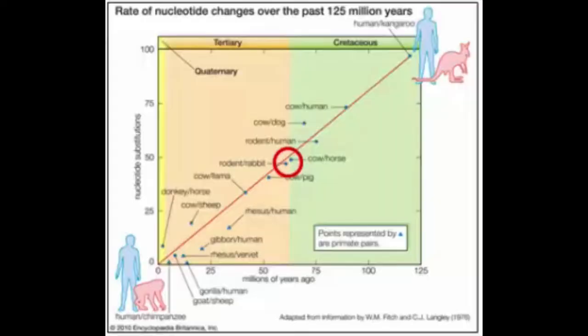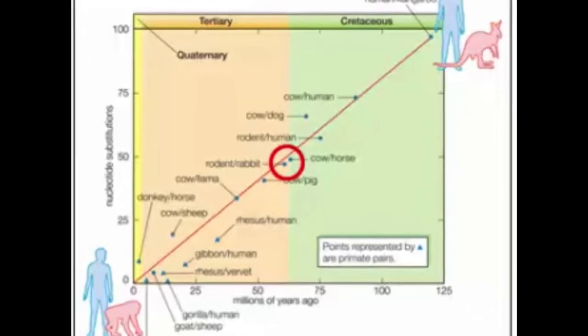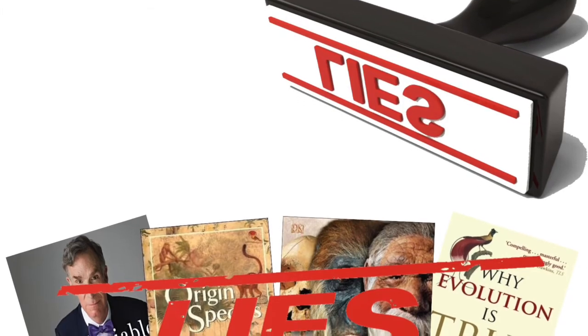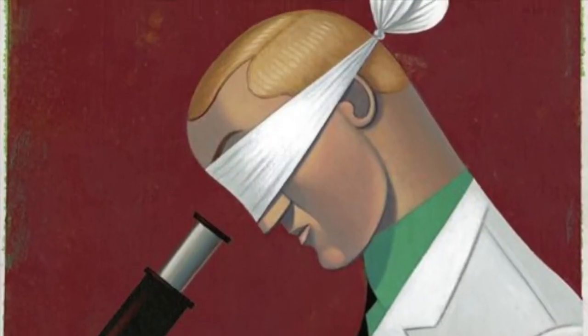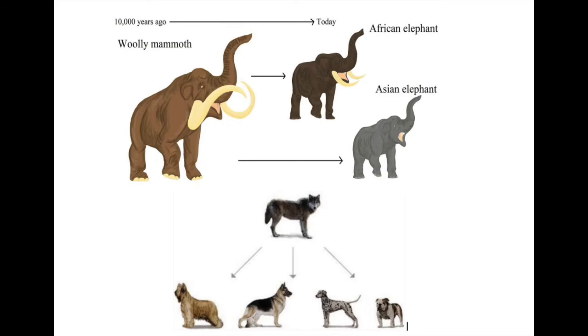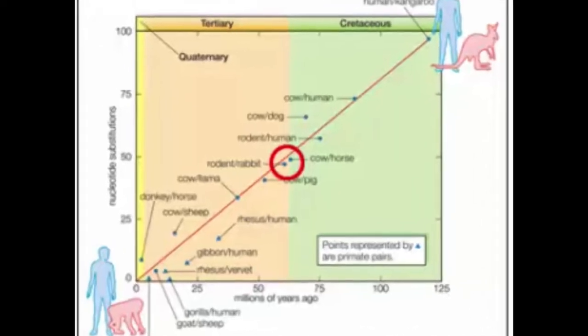Just look at this chart — their own data proves them wrong. When looking at this chart, you can see that the cow and horse supposedly diverged at the same time as the rodent and the rabbit, even though the rabbit and rodent have a much faster generation time, they have exactly the same substitution rate. This should not be true if evolution were true. We should expect populations with shorter generation times to diverge faster, but that is not what they see, and the chart here exposes them.